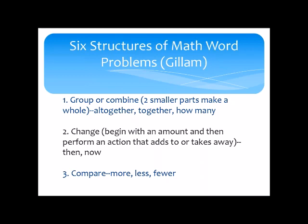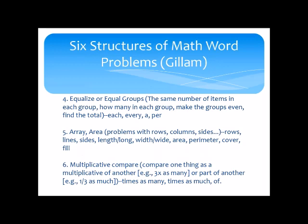The six structures of math word problems each have keywords that go along with them. For example, if you're looking to group or combine things, the keywords would be things like 'altogether,' 'together,' and 'how many.' With change, some keywords are 'then' and 'now.' The last four structures — equalizing, array, and multiplicative comparing — also have their own keywords. This is something important to have in your references.